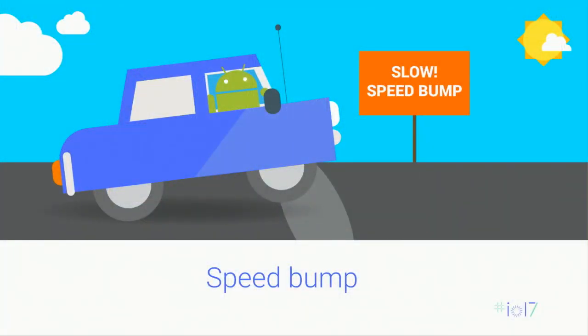Slow build speed is a huge productivity buster — it's like driving down the road and constantly hitting speed bumps. We've heard you loud and clear that build speed is critical to your productivity. That's why we've been focused for the past several quarters on improving build performance. Over the past year, we've been hosting developer build clinics where we meet with developers one-on-one about their build performance issues. The most surprising part was that more often than not, we could speed up their development builds by 3x, 4x, sometimes even up to 10x, by applying a simple set of tips — and that set of tips is what we will share with you today.